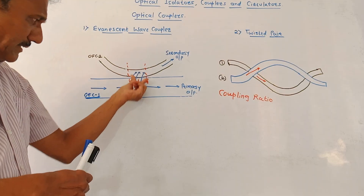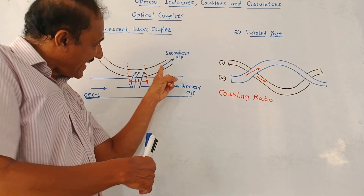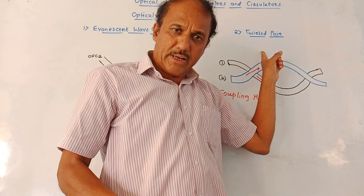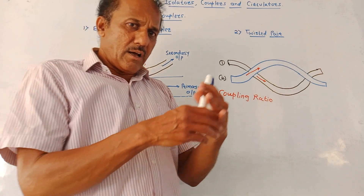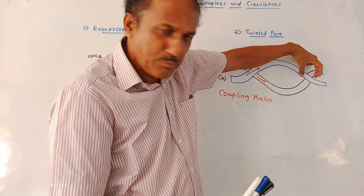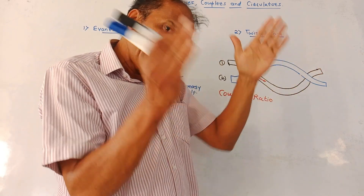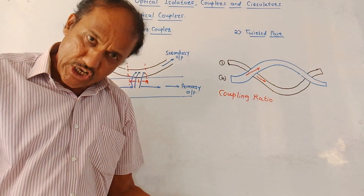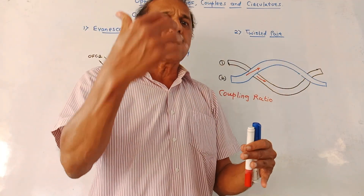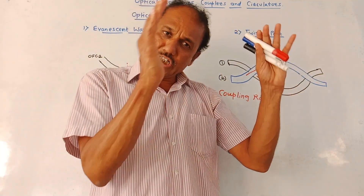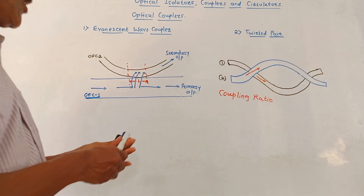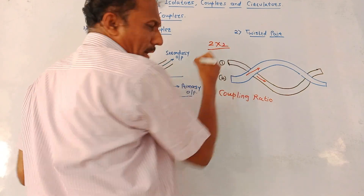Due to this coupling, certain optical power gets transferred from OFC 1 to OFC 2, and at the output of optical fiber 2 you get some secondary output. The next type is the twisted pair coupler. As the name indicates, two fiber optic cables are twisted together as shown in the diagram. This particular twisted portion is fused with each other. Due to this fusion, the core layer of one fiber optic cable acts as the cladding layer for another fiber optic cable, and optical coupling takes place — optical power gets transferred from one cable to another. These are the two major types of optical couplers, also called 2×2 optical couplers.